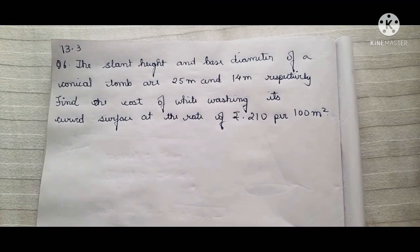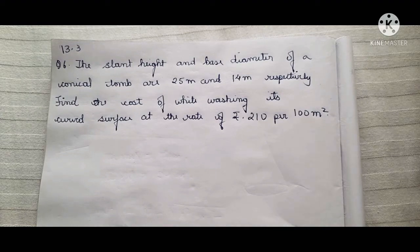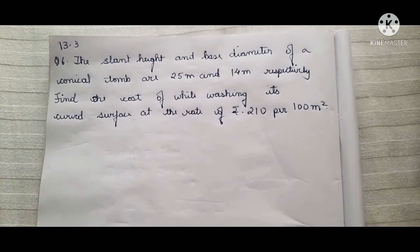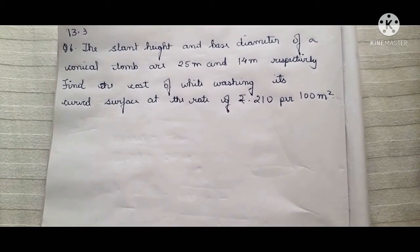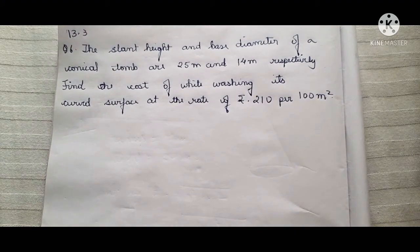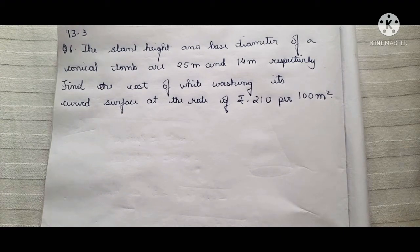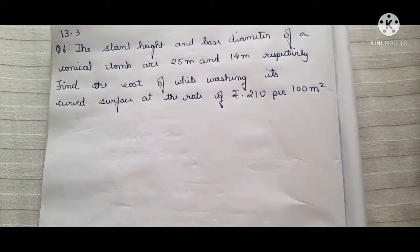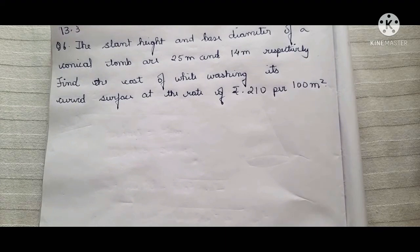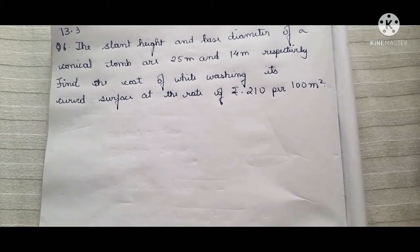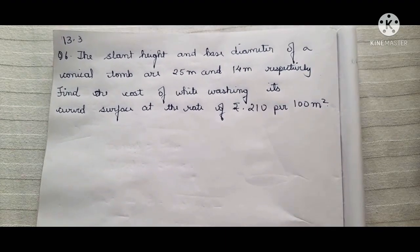Today we will be doing target point 3, question number 6. The slant height and the base diameter of a conical dome are 25 meters and 14 meters respectively. Find the cost of whitewashing its curved surface at a rate of rupees 210 per 100 meters square. So we are going to find the curved surface area.